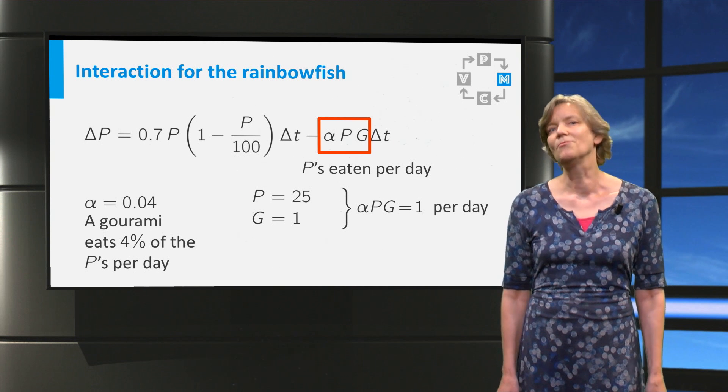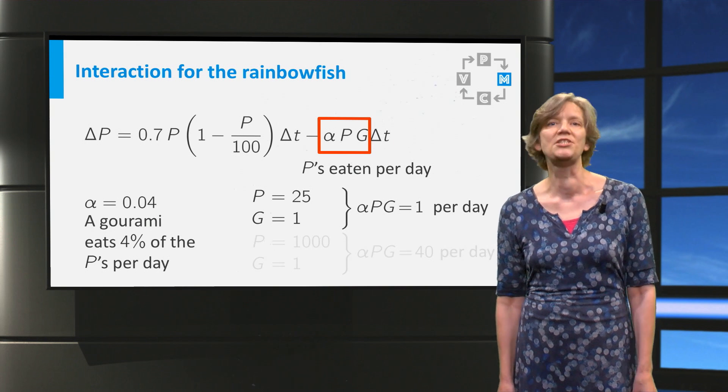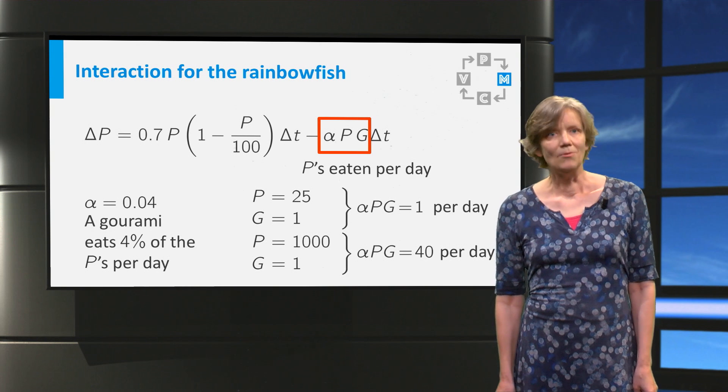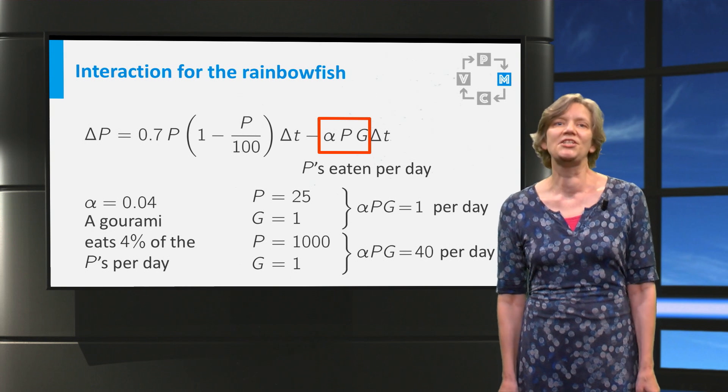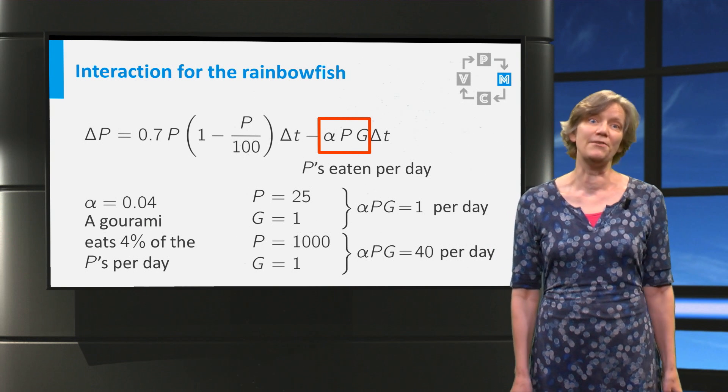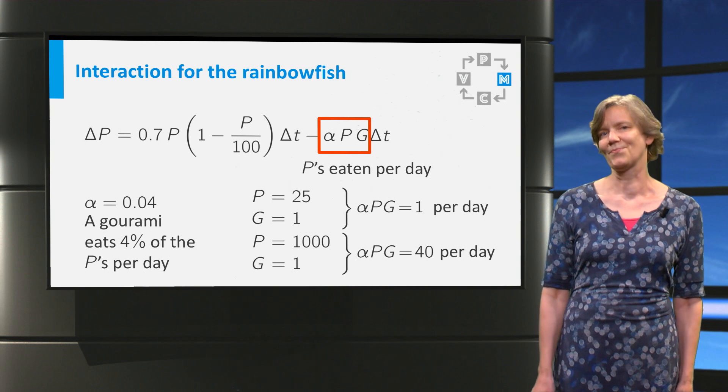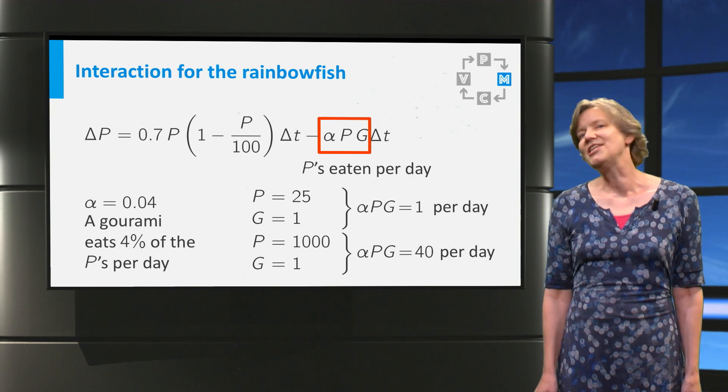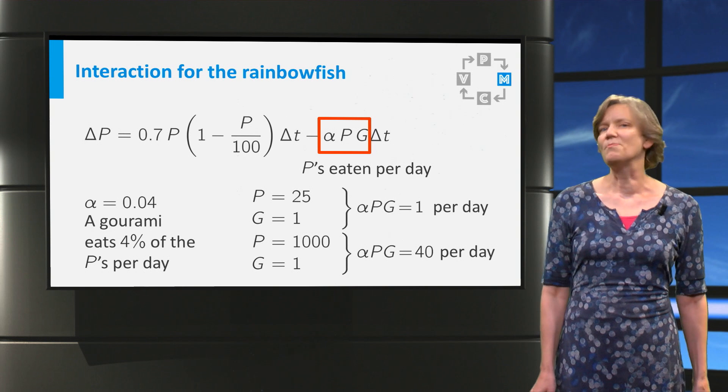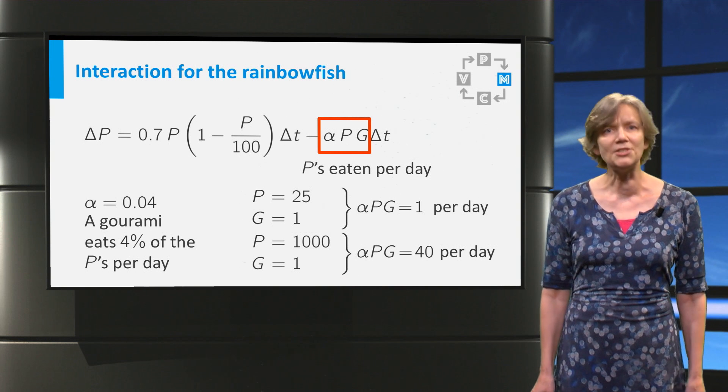You see that when there are very many rainbow fish, the model does not hold up. When there are 1000 rainbow fish, the poor gourami would have to eat 40 rainbow fish a day. So the conclusion is that when P is high, this model has to be improved.